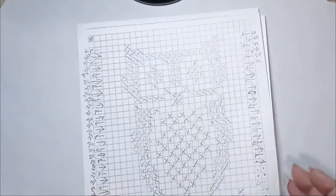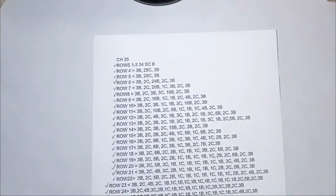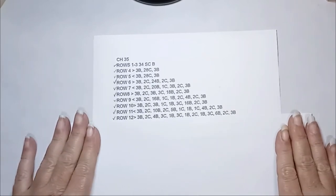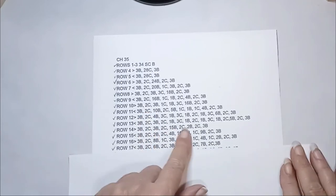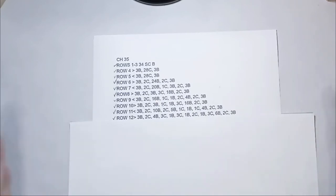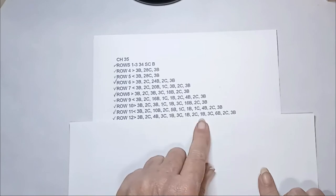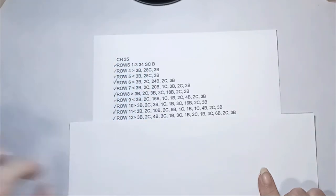I had row counts on the side so I knew where I was at. When I was further down in the pattern, I'd mark off what row I'm on with a piece of paper so I'm not accidentally jumping to the wrong row and ending up with the wrong stitch count. I know I'm only going to have 34 stitches in a row, so each number in a row like 3+2+4+3+1+3+1+2+1+3+6+2+2+3 should equal 34.